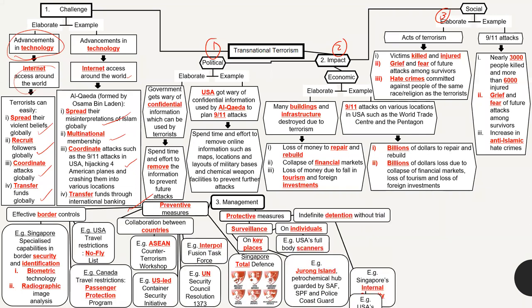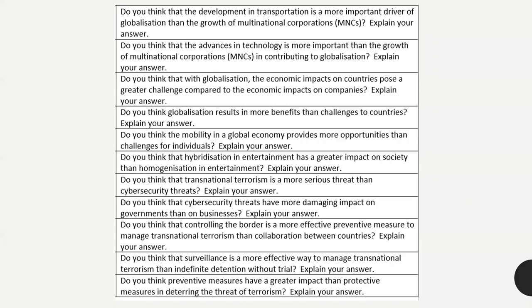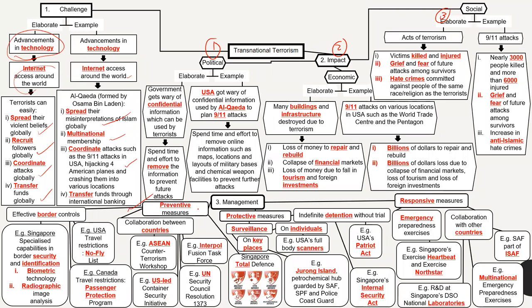To address terrorism, we have three types of measures: preventive, protective, and responsive. Essay questions might ask which is more important. Protective measures include securing borders — making passports secure, using biometric checks at customs, and for example the USA restricting entry for people from certain countries. Countries can also collaborate with each other to counter terrorism. Within the country, protective measures include surveillance — CCTV cameras, coast guards, and police guarding sensitive places.